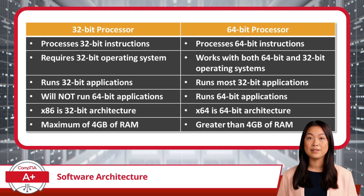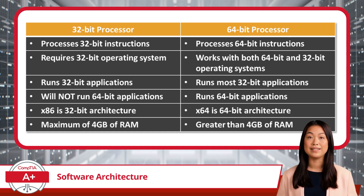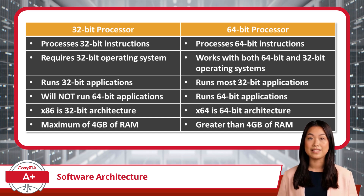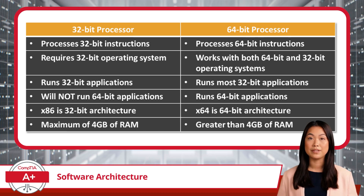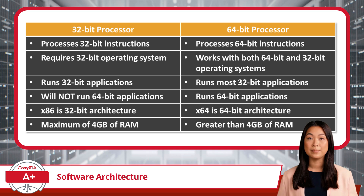32-bit processors are appropriately named as they support instructions that are 32-bits in size. And since you are so smart, I am sure you have already deduced that 64-bit processors are designed to handle 64-bit instructions. This has a trickle-down effect. First up is the operating system. A 32-bit processor is compatible with a 32-bit operating system, while a 64-bit processor is compatible with both 64-bit and 32-bit operating systems.